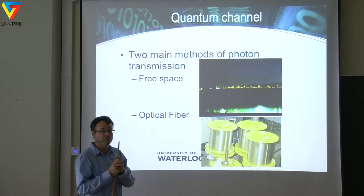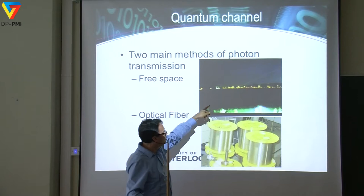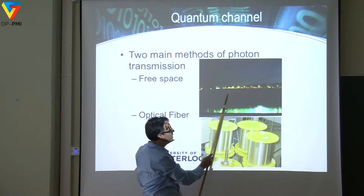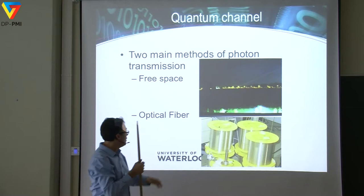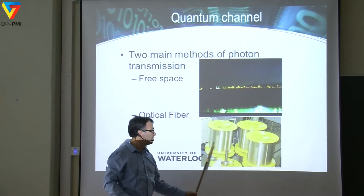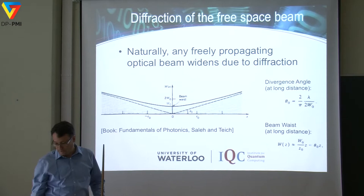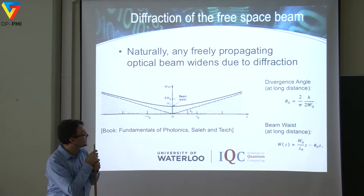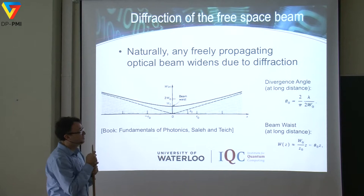Now let's look at the quantum channels. There are two main methods for sending photons. One is free space — here we have an example of an experiment we recently did, where a laser was sent from the roof of our building to a nearby road. The other is optical fiber, well known, with about 100 kilometers of fiber on spools in the lab.